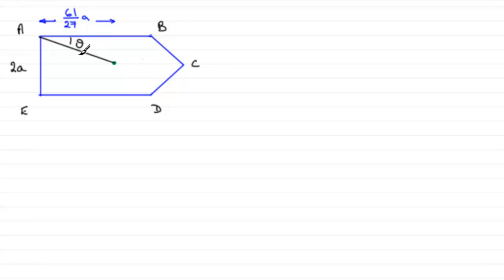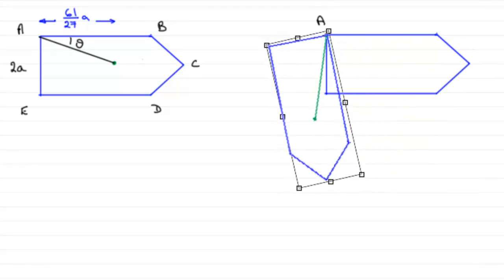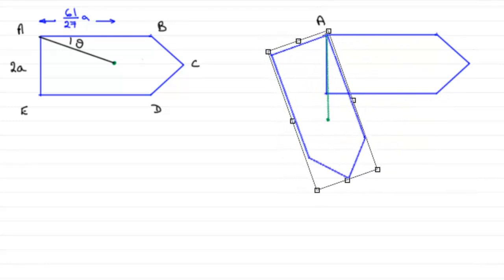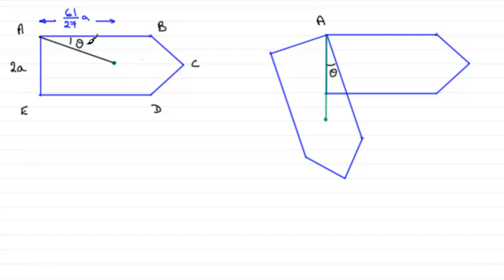I'll show you a little animation. If we take our lamina and suspend it from A, and then just release it, it's going to fall and then come to rest with the centre of mass vertically below A. So hopefully you can see that this is the angle theta that I've shown you up here.